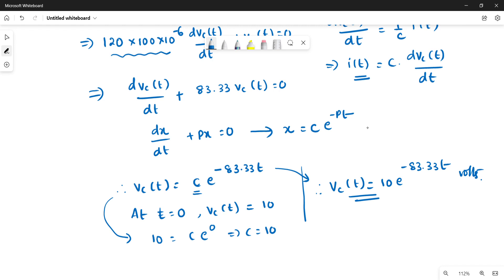Therefore, voltage across the capacitor, substituting the c value in this equation, we get 10 into e power minus 83.33t volts. This is how we find the voltage across the capacitor. Thank you so much for watching this video.